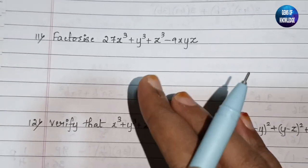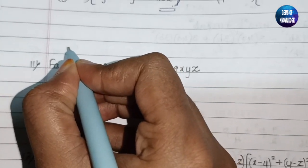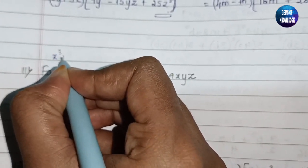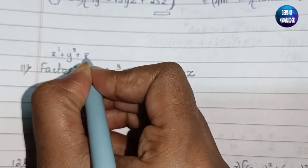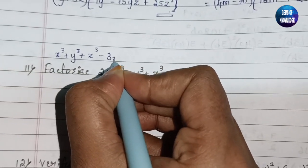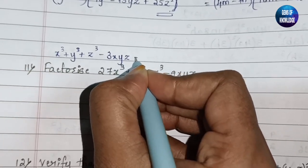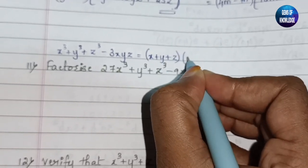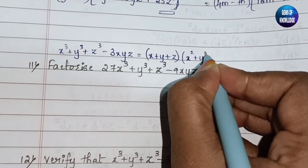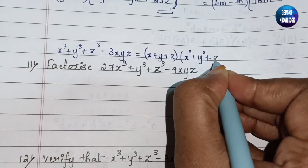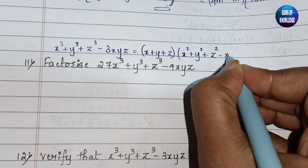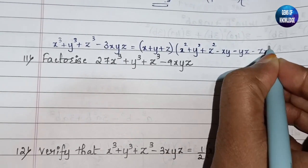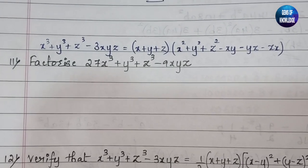This question is in the form of the 8th identity. The 8th identity is: x³ + y³ + z³ - 3xyz = (x + y + z)(x² + y² + z² - xy - yz - zx). Let me write it here.